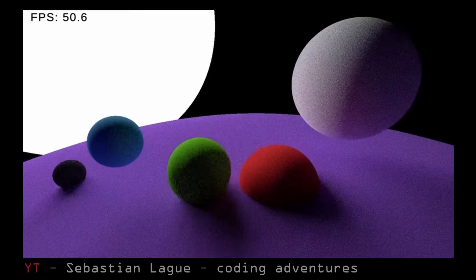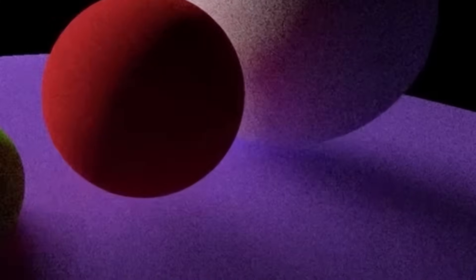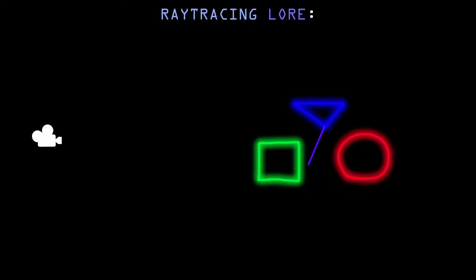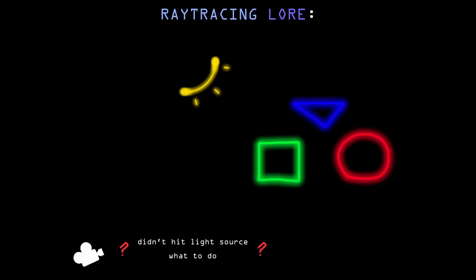I watched some YouTube videos about ray tracers and a lot of them seem to have a common issue: random pitch black pixels that accumulate in mostly dark areas. Ray tracing works by shooting rays from the camera and making them bounce around the scene, collecting color until they hit a light source. If they don't hit a light source — because their bounces ran out or they flew off into the void — you don't know what color to assign that pixel, so it stays black.